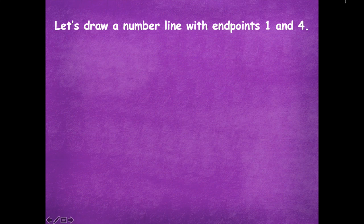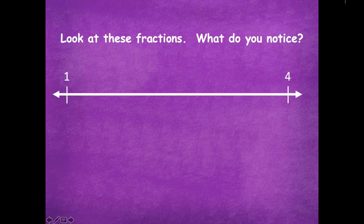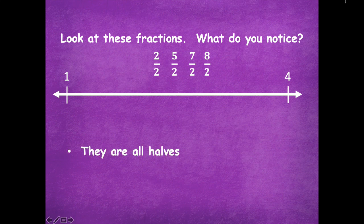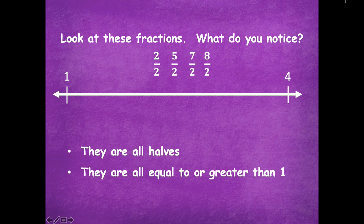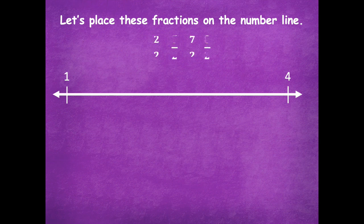Let's draw a number line with endpoints one and four. Look at these fractions: two halves, five halves, seven halves, and eight halves. What do you notice? They're all halves, they're all equal to or greater than one, and they're in order — but some of them are missing. So today's lesson is about labeling fractions on the number line where you're not going to label every single fraction, just the ones given. Let's place these fractions on the number line.